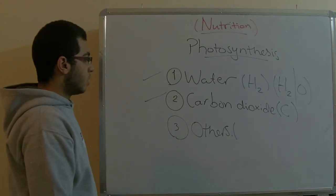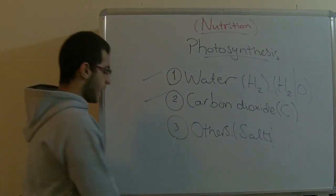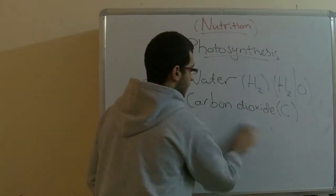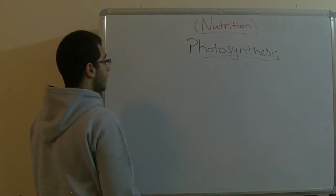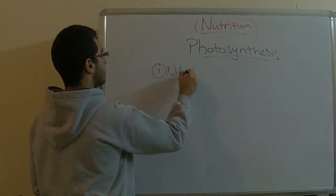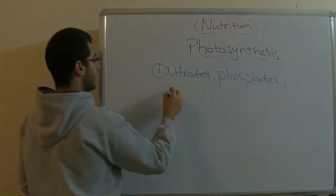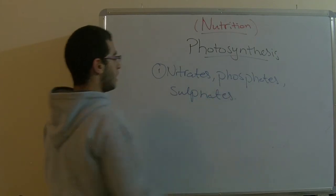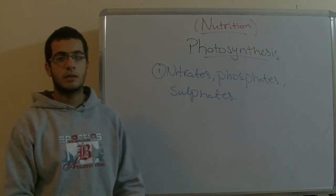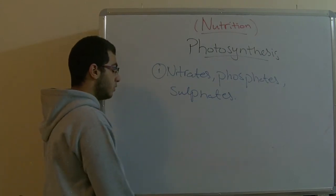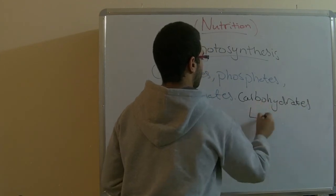The last thing here is the others, which are salts. We have examples for all these salts mentioned in our chapter. The first are nitrates, phosphates, and sulfates. Nitrates, phosphates, and sulfates are important in the conversion of carbohydrates into proteins.